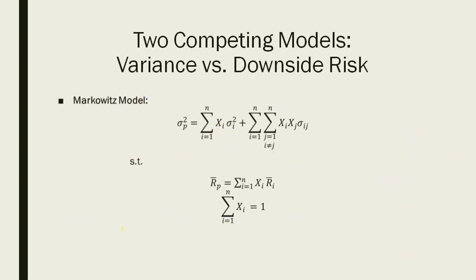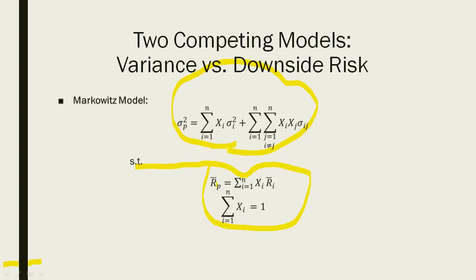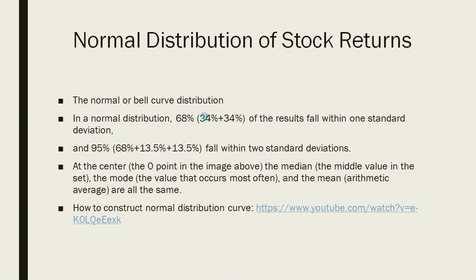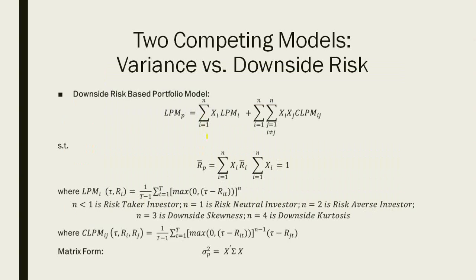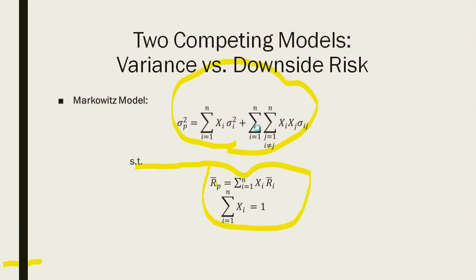This is a recollection of what we covered. Looking at the two competing models, the restrictions are the same — all weights add to one and portfolio return is the weighted return of individual securities — however, the proxies of risk are different. That is why we call them two competing models: the variance-based and the LPM-based.